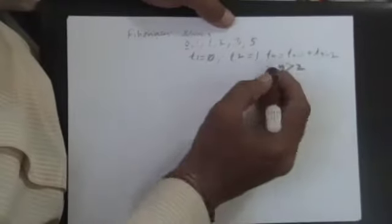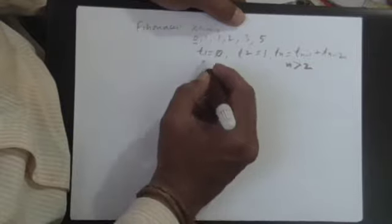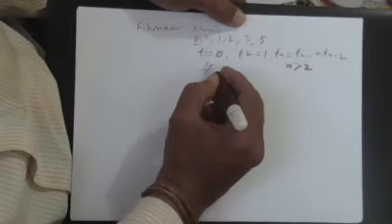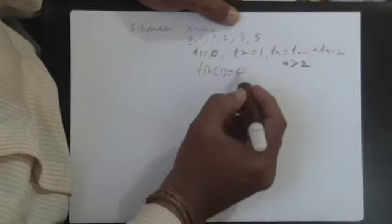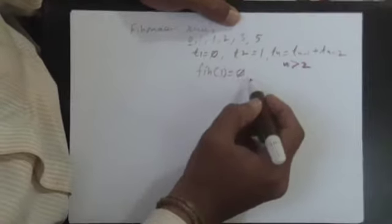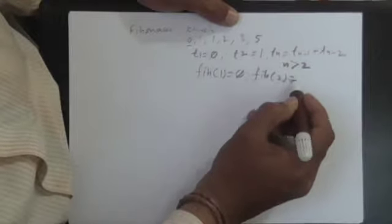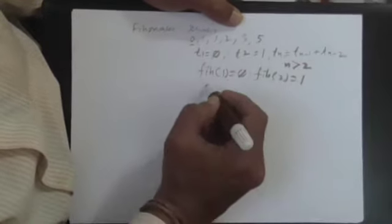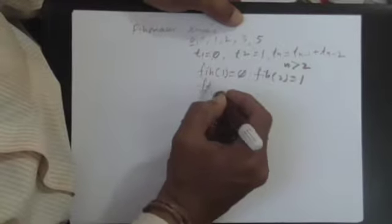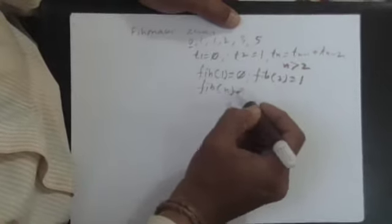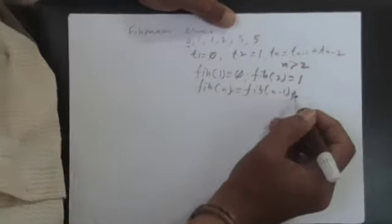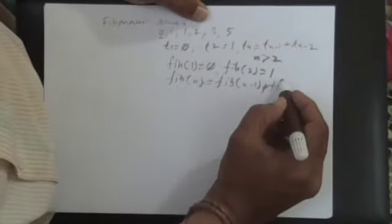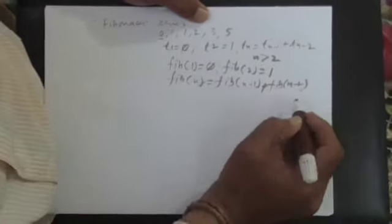So for any term, this is how I define. My Fibonacci term, in other words, I say that Fib of 1 is 0, the first term is 0, and the second term is 1. And all other terms, I say Fib of nth term is Fib of n-1 plus Fib of n-2. This is what I derive.